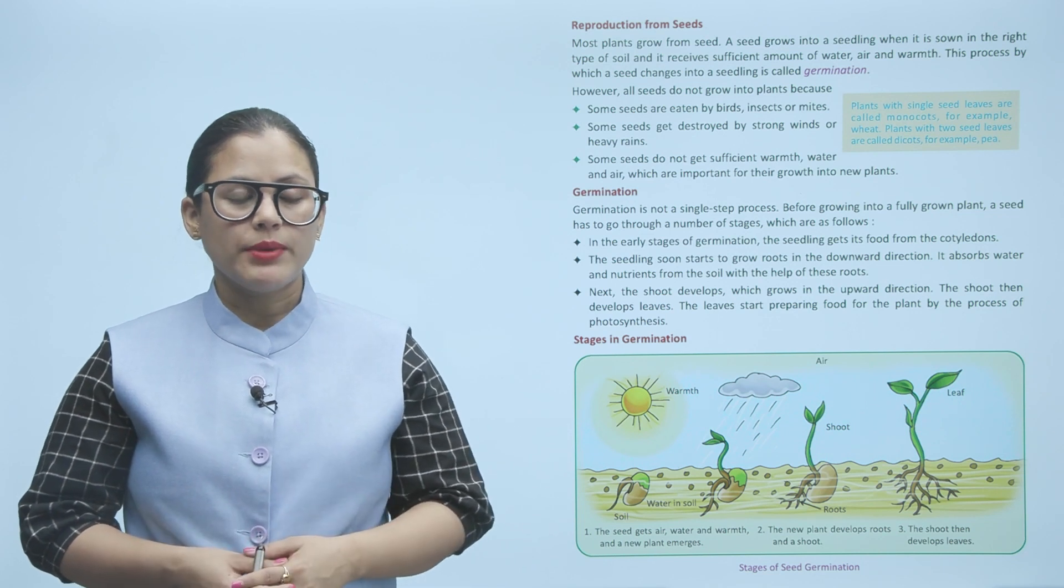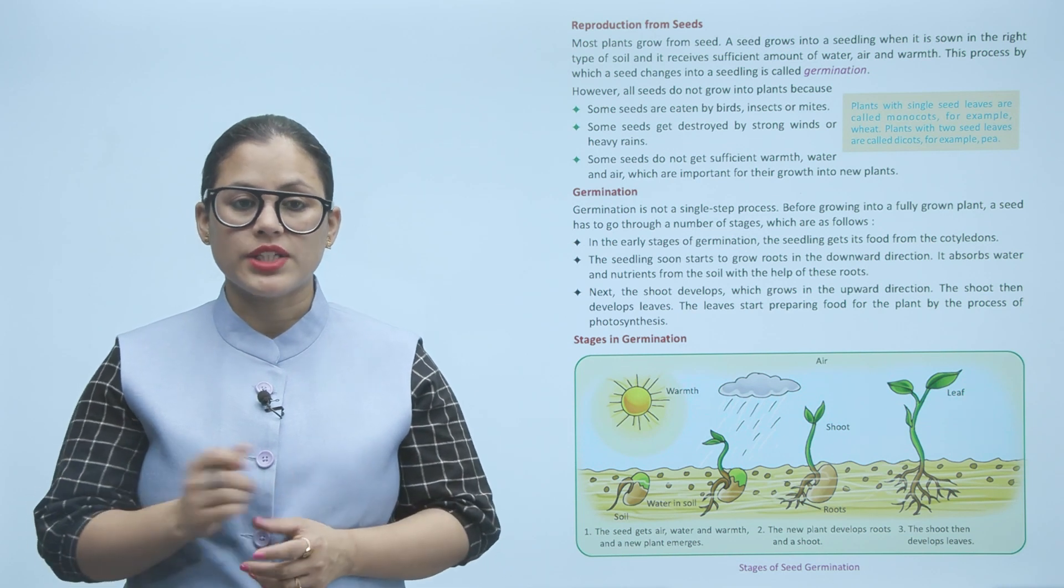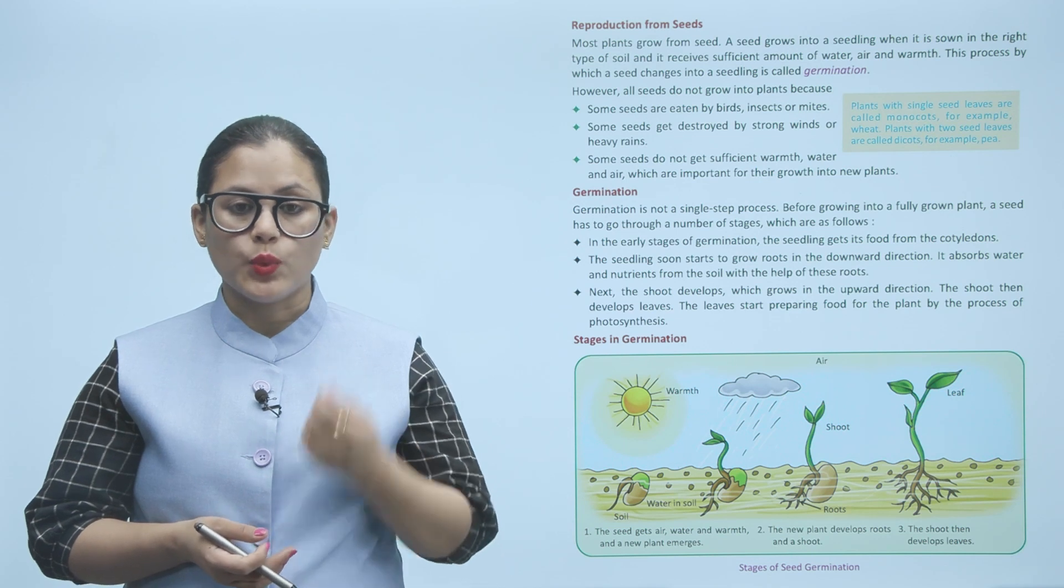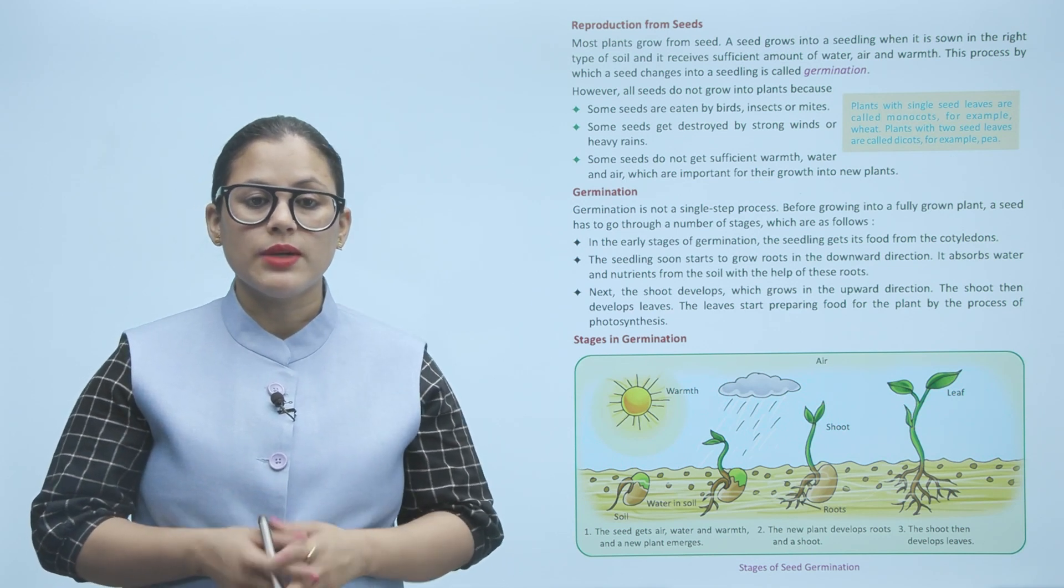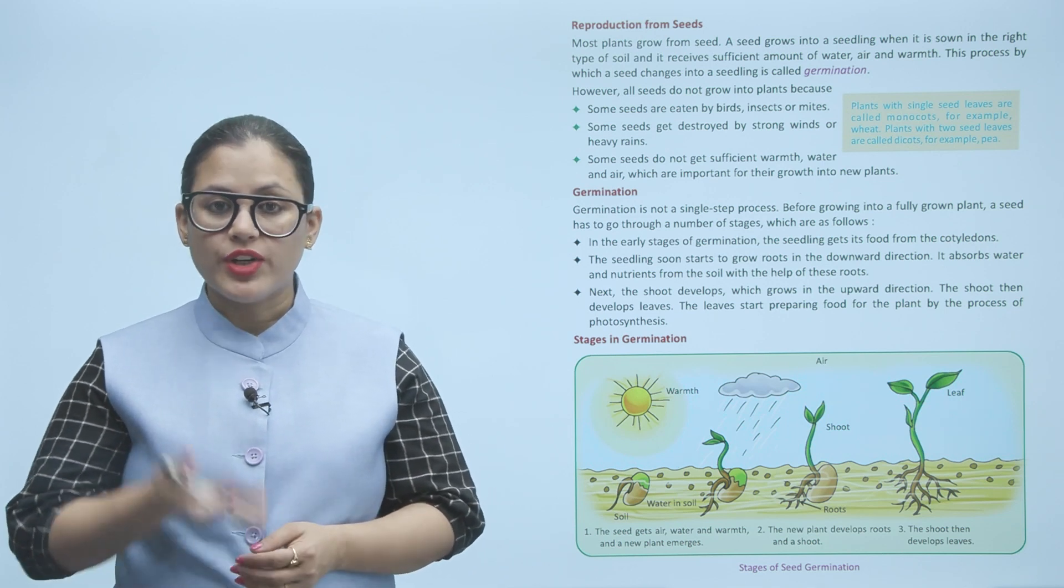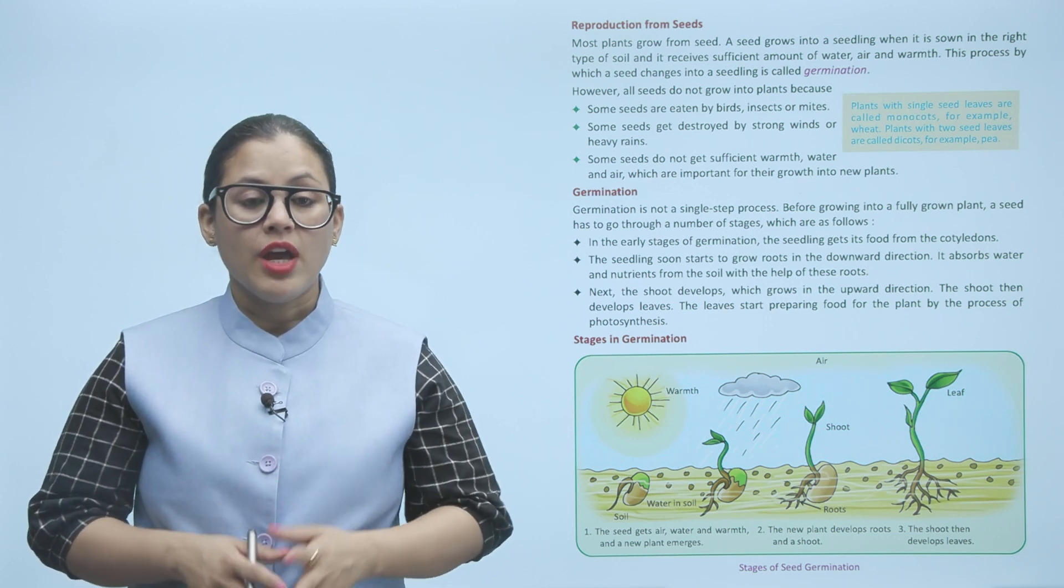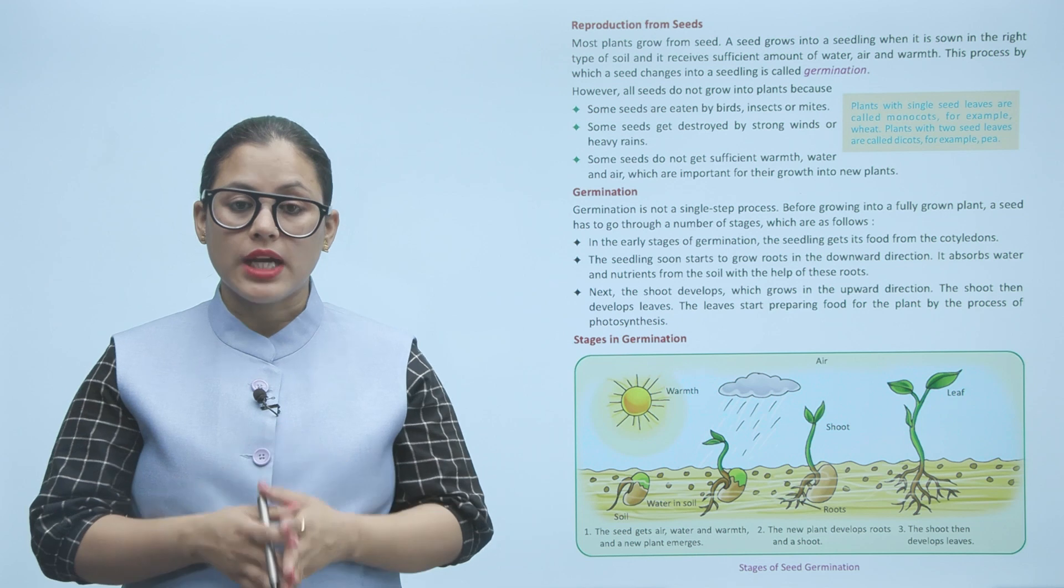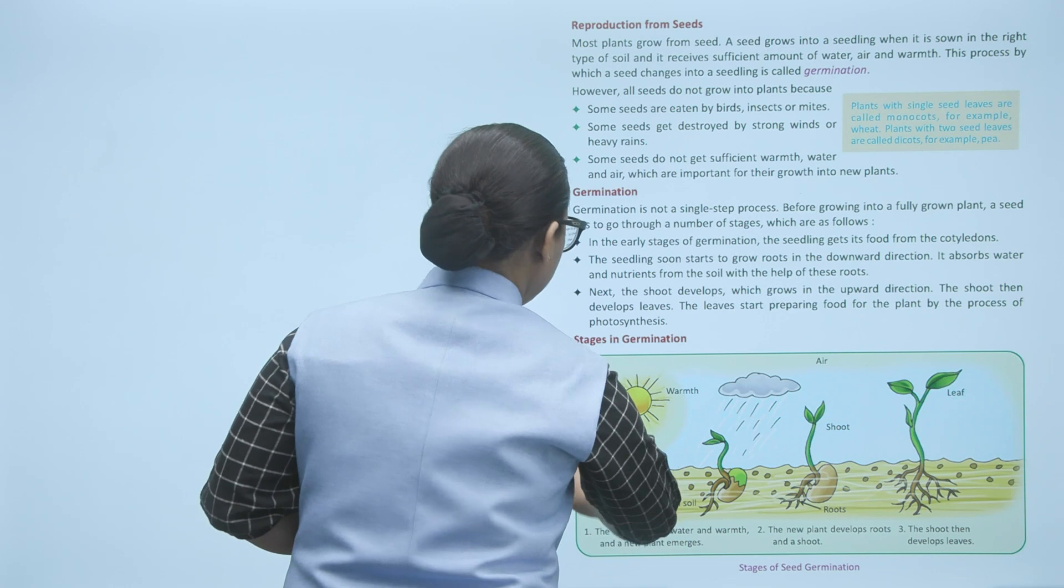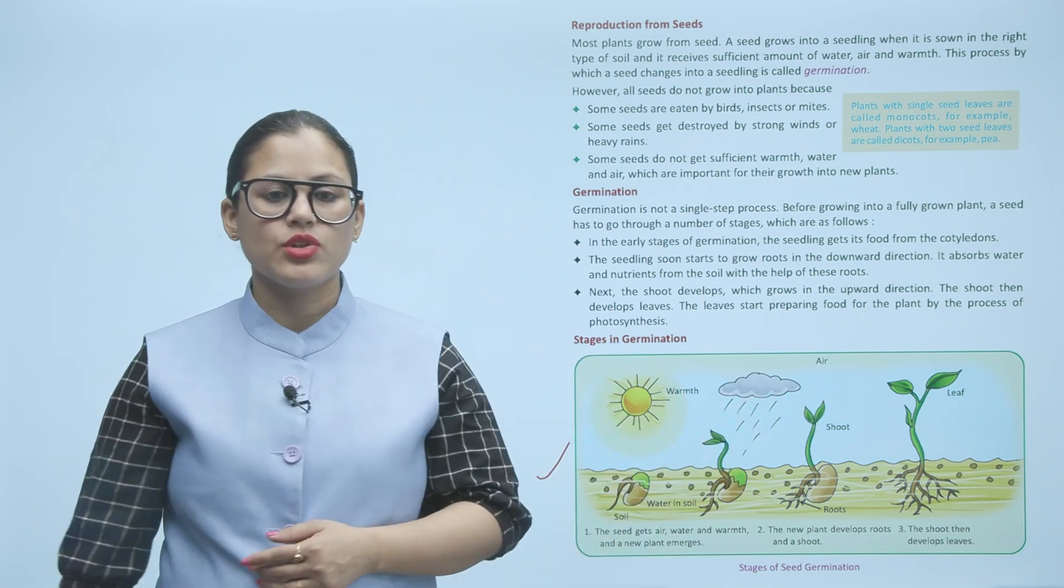It absorbs water and nutrients from the soil with the help of these roots. Next, the shoot develops which grows in the upward direction. The shoot then develops leaves. The leaves start preparing food for the plant by the process of photosynthesis.